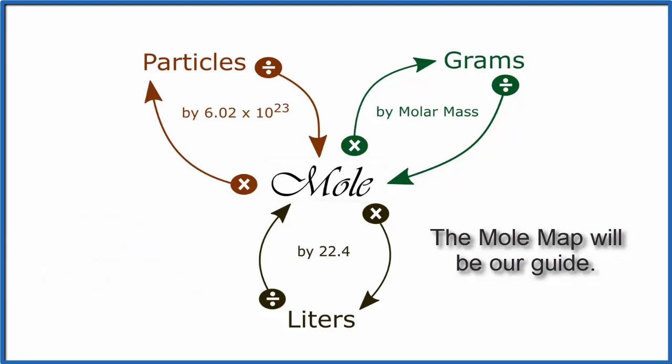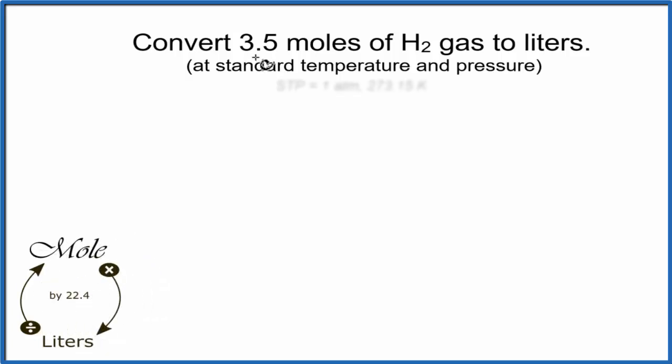Let's jump right in and try one. Here we're given 3.5 moles of H2 gas, and we're going to convert to liters. So when we're dealing with gases, we're dealing with liters. And it doesn't matter that it's hydrogen. It could be another gas. It'll still be the same calculation.